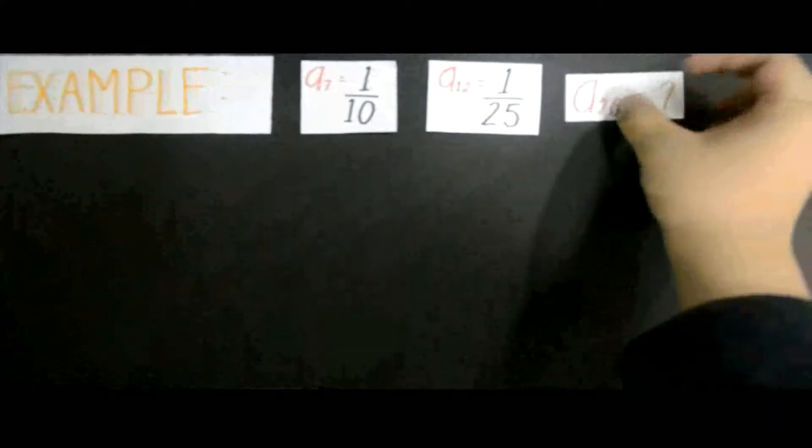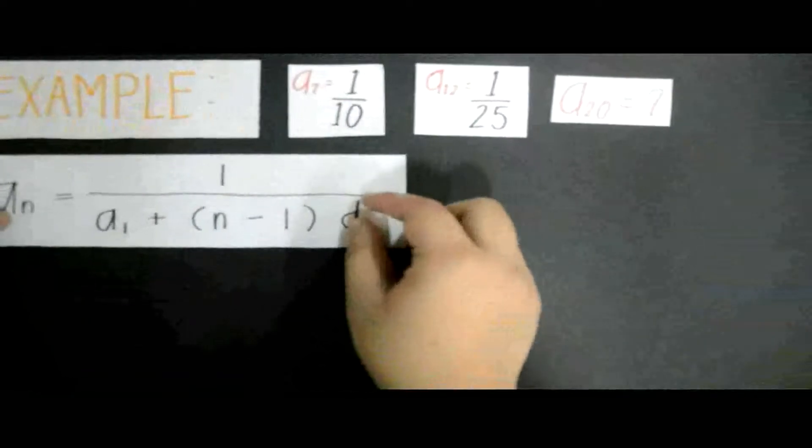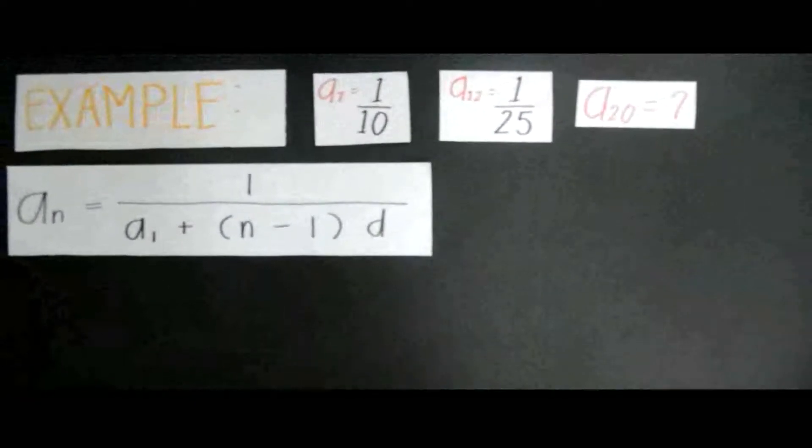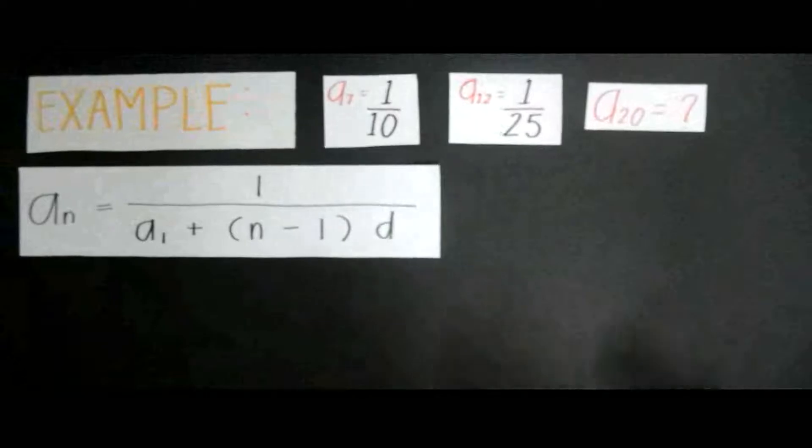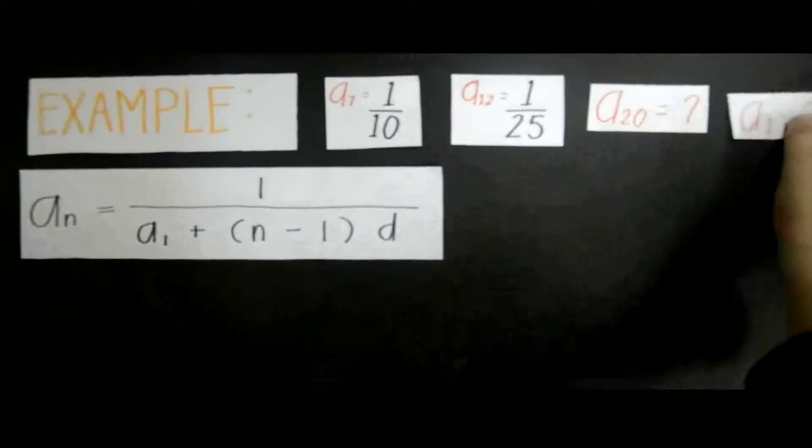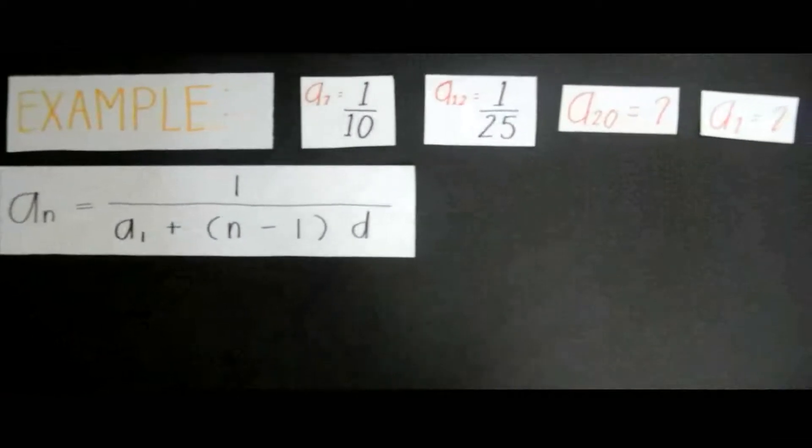Here is another example. a_7 is equal to 1 over 10, and a_12 is equal to 1 over 25. What is a_20? First, we must look at the formula again. We need to look for a_20, but first we need to look for a_1 and d, the common difference.